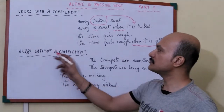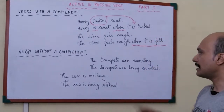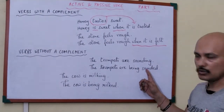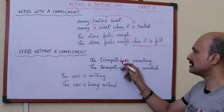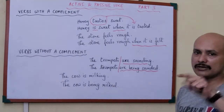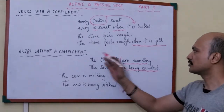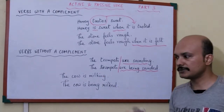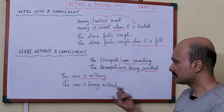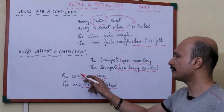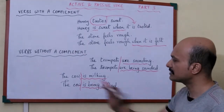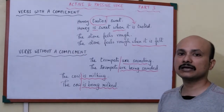Now moving to verbs without a complement — there is no complement with the verb. Example: 'The trumpets are sounding.' Who is sounding the trumpets? Someone is doing that. Here we write only the passive part of the verb. 'Are sounding' becomes 'are being sounded'. So 'the trumpets are sounding' becomes 'the trumpets are being sounded'. Similarly, 'the cow is milking' — someone is milking the cow. The subject stays the same, and 'is milking' becomes 'is being milked'.